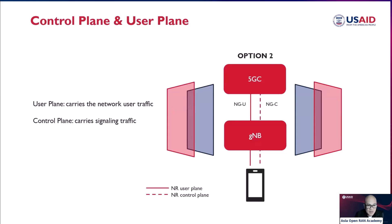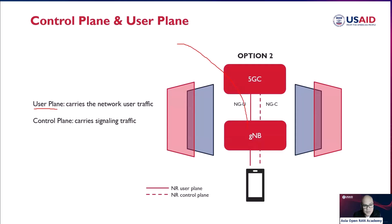Imagine we have the core network of 5G, and then you have a gNodeB, and there is communication happening between these two. There is different traffic. We have the user plane — this is the plane that carries the network user traffic. So if you are downloading a huge file from a certain server, it will go inside your 5G core, and before it reaches your user terminal, it will use the user plane.